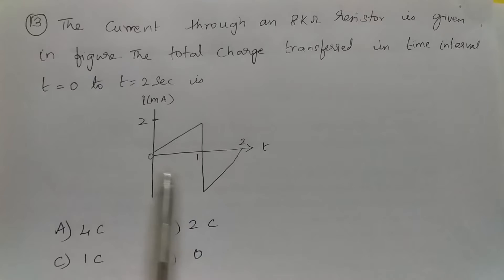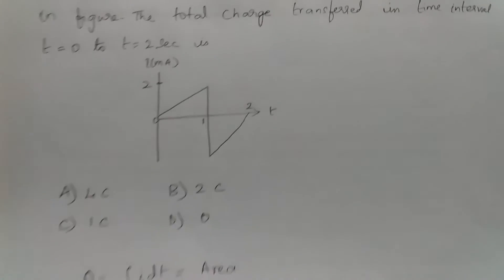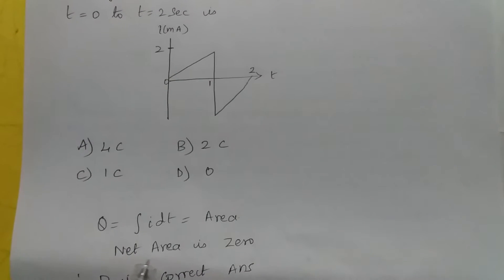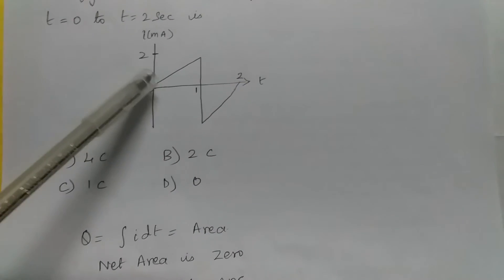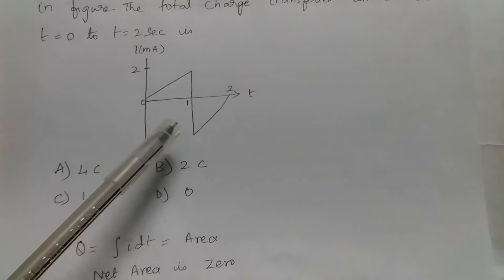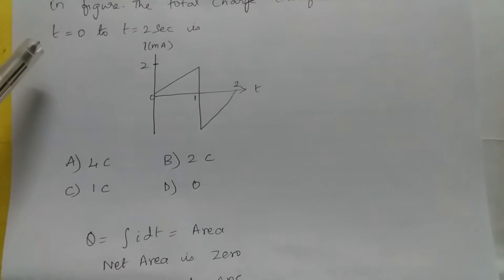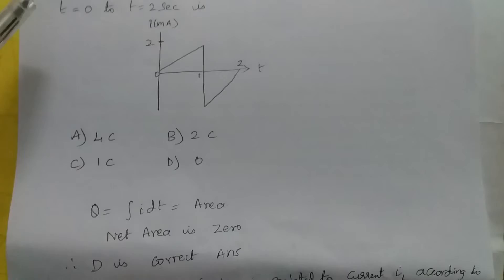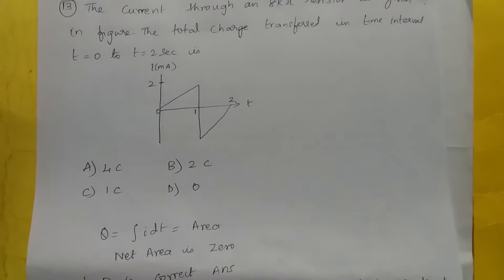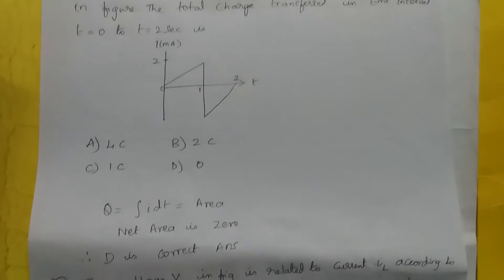What is the total charge? Q will be integral of I dt, that is the area. So net area is 0. You see that there is an equivalent positive value and an equivalent negative value, so if you add all the values, the net current is 0. So D is the correct answer. The total charge is 0 since current is 0.